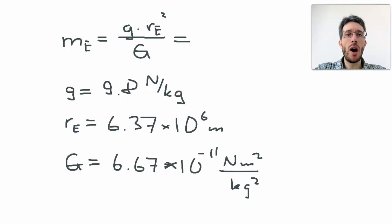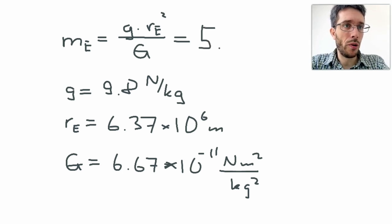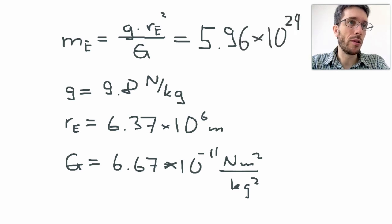So let's say we now have found all these values, small g, the radius of the Earth, and the universal constant of gravity, we plug it into our equation, and what we will get for the mass of the Earth is 5.96 times 10 to the 24 kilograms.